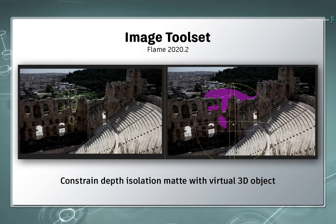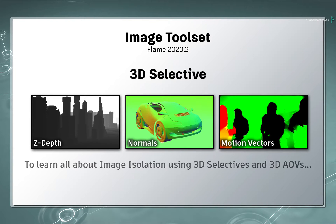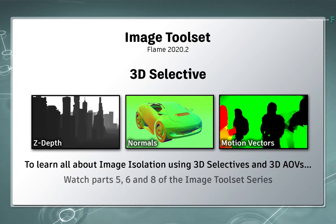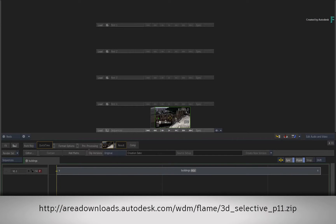If you are new to 3D Selectives, I suggest watching parts 5, 6 and 8 of the Image Toolset series to explain the basics and fundamentals of 3D AOVs. If you'd like to follow along with this video, click the link in the description below or type the link displayed to download the media.